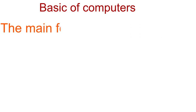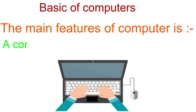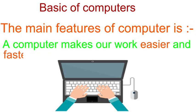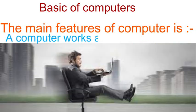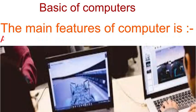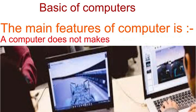The main features of computer: A computer makes our work easier and faster. Hummara kama ko asan or tiz bana ti hai. A computer works at a very fast speed. Computer speed me bhoot tiz hoota hai. And does not make any mistakes or error. Koi bhi galtiyan nahi karta.